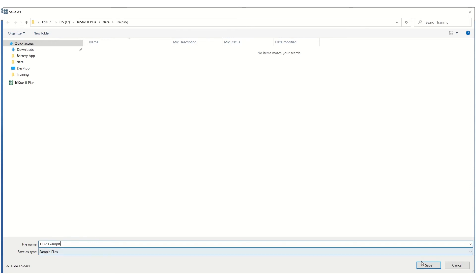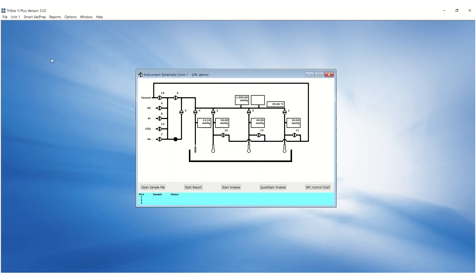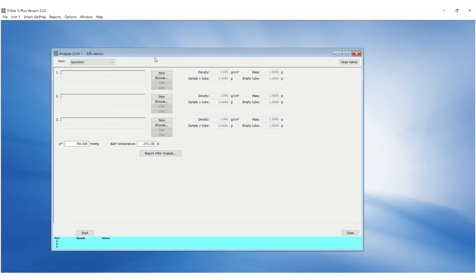To start an analysis, go to the Unit menu and click on Sample Analysis. Browse and select the sample files for the appropriate sample ports. Click Start.